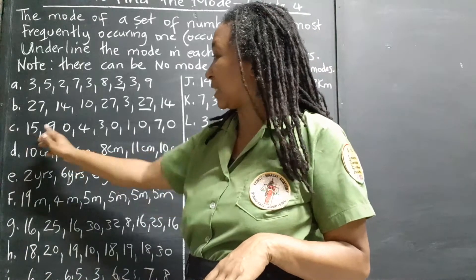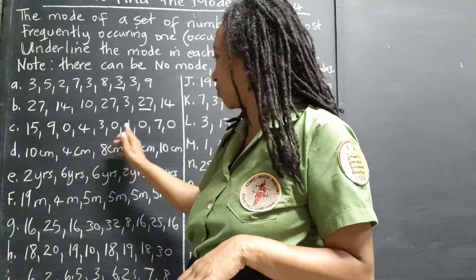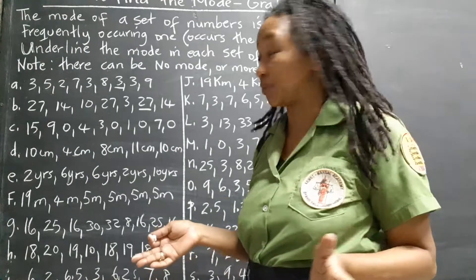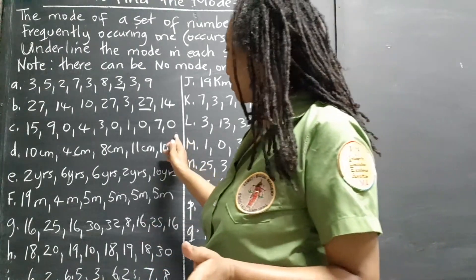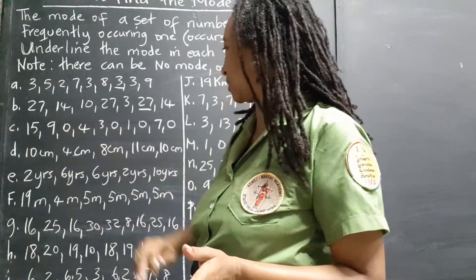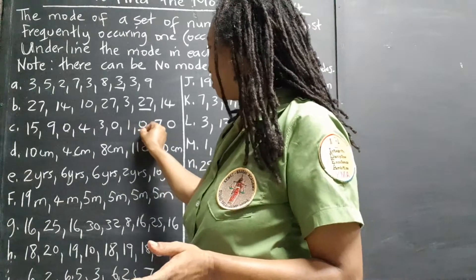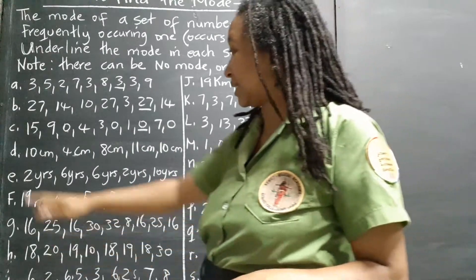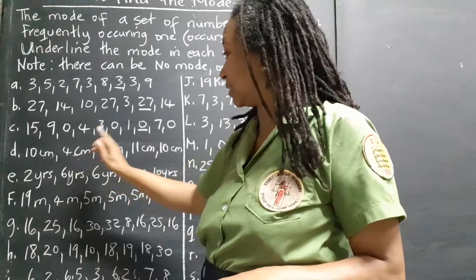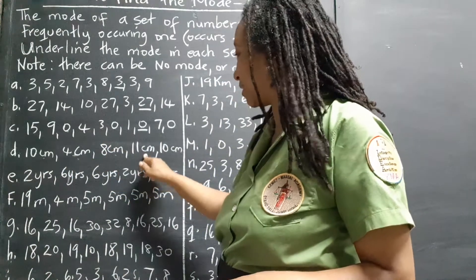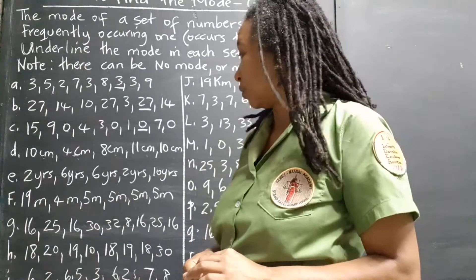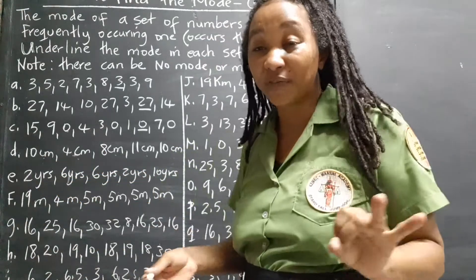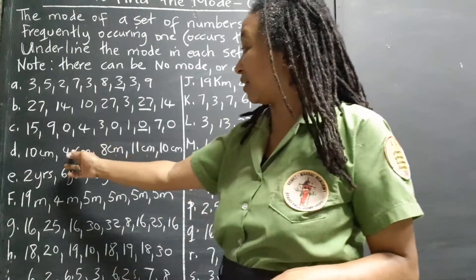Set C: 15, 9, 0, 4, 3, 0, 1, 0, 7, 0. Which number is popping out? Zero — there are four zeros, and all other numbers appear just once. So the mode from this set is zero. Set D: 10 cm, 4 cm, 8 cm, 11 cm, 10 cm. The 10 centimeters is repeating — there are two of them, while the others are listed just once.